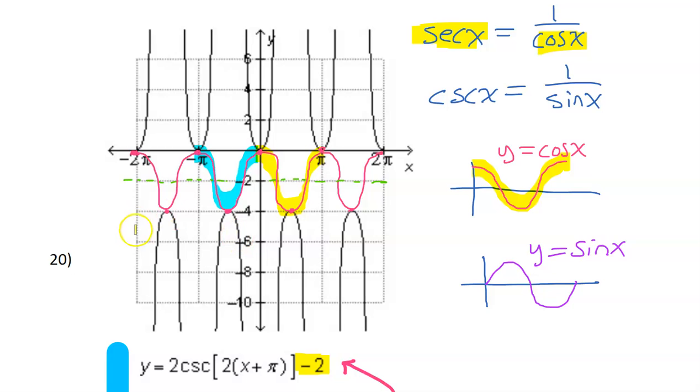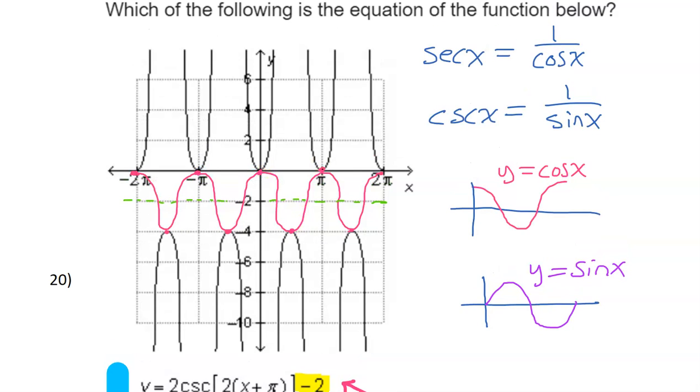However, let me back up and contrast with a sine function. A sine function that had a period of pi—it's clear that this graph repeats every pi, so the period is definitely pi. A sine function would look like this.